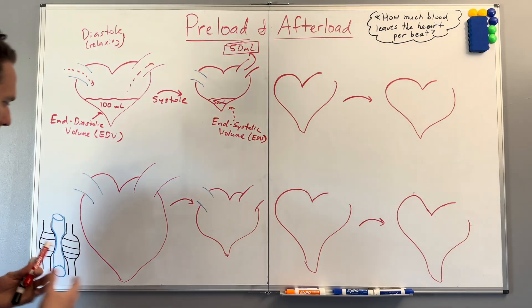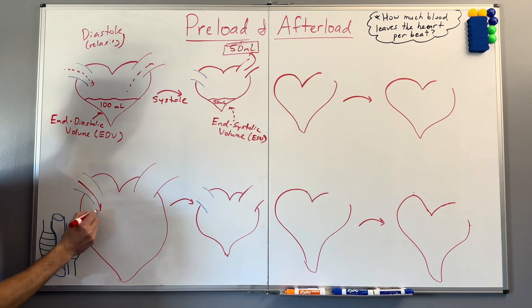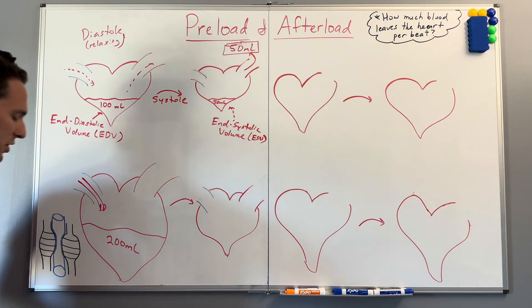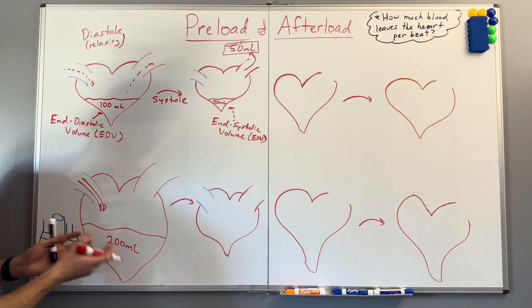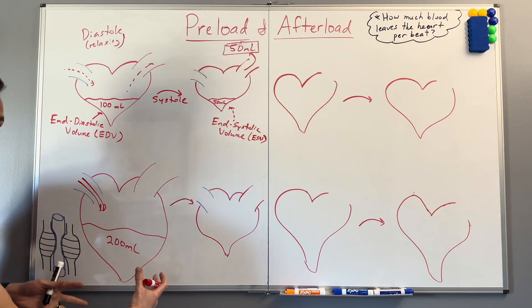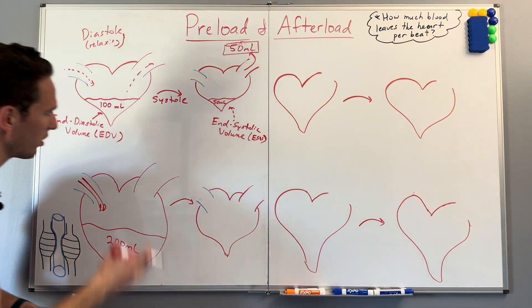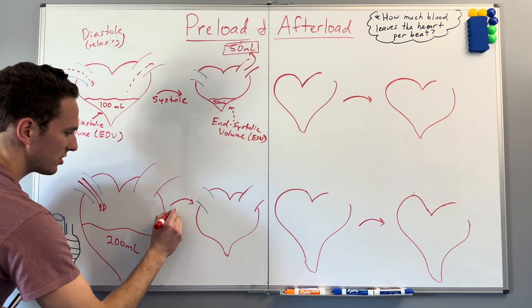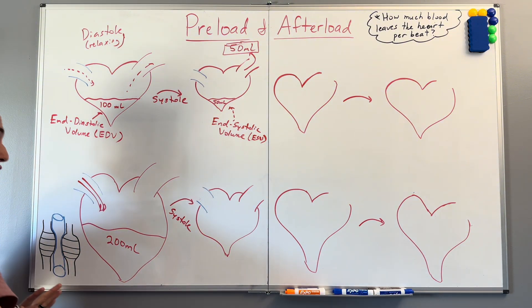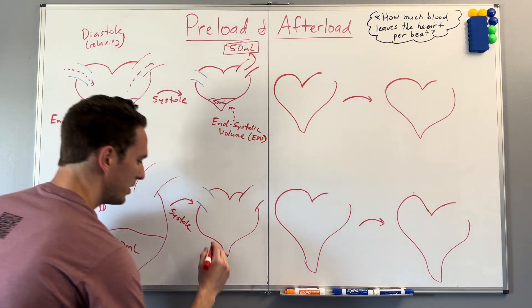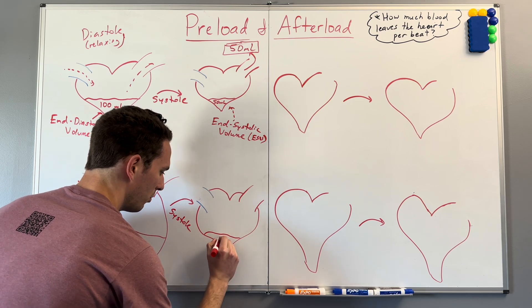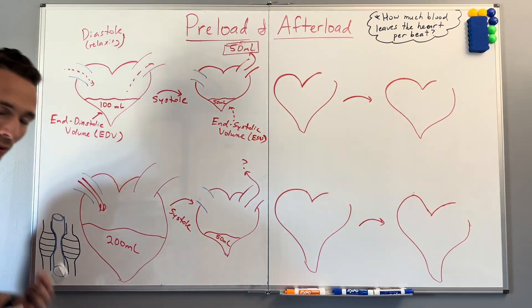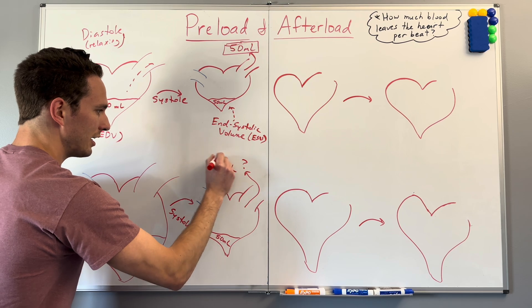Check out this next example. This time the heart is really filling up well — there's a lot of blood coming back into it. During diastole, this heart fills up so much, let's say 200 milliliters. As 200 milliliters fills up the heart, the heart stretches like crazy. So what can you guess, if the heart is like a bow and arrow, what will happen when the heart contracts? Well, during systole, the heart is going to pump out so much more blood because it contracts back really hard. We'll say there's about 50 milliliters left over again. So how much blood left the heart? That's 150 milliliters leaving the heart.